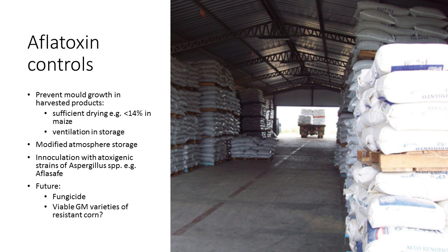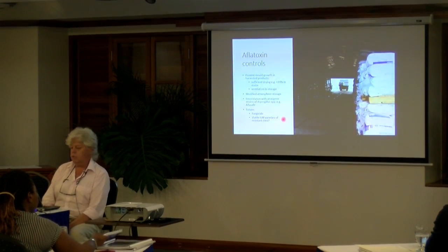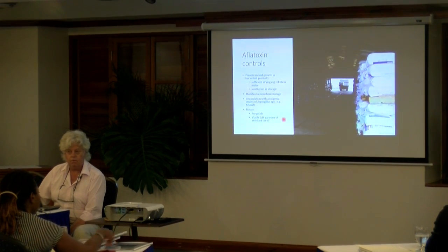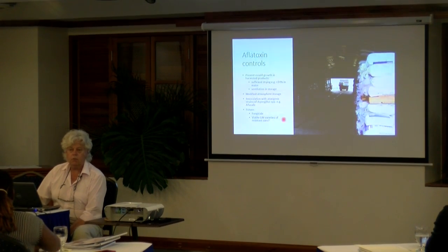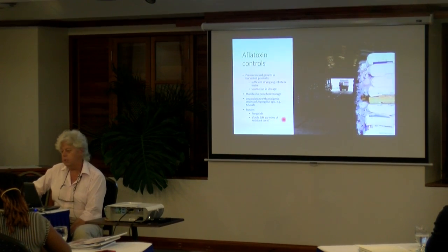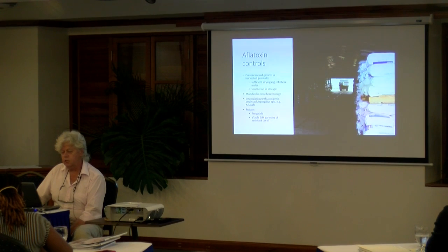Work is also going ahead with different fungicides — spraying crops or harvested products — and looking at the possibility of using genetically modified varieties that are resistant to attack by Aspergillus. Certainly from a food safety of fishery products point of view, we need to be thinking about storage conditions and about including animal feeds for aquaculture within our monitoring programs. If you have a major aquaculture sector, this is something which needs to be taken into account.